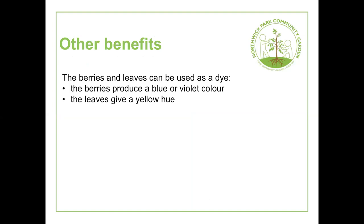You can see blackcurrants in the garden right now — there are a few dotted around. Iris is going to talk about fennel. She didn't know much about fennel other than it goes well with fish, but found lots of interesting detail.